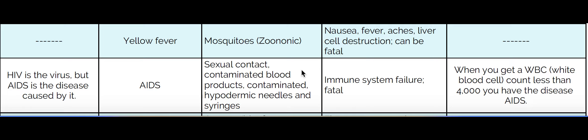HIV causes immune system failure because it is very specific for a type of white blood cell called the helper T cell. Helper T cells are the garbage collectors in your system — they clean up all the bacteria and viruses that move through your lymphatic system. When you have an infection, your bone marrow starts producing helper T cells to escort it out. It can take between eight months and two years for that helper T cell count to start decreasing due to HIV gobbling them up.